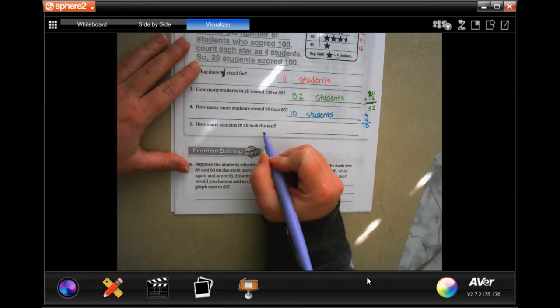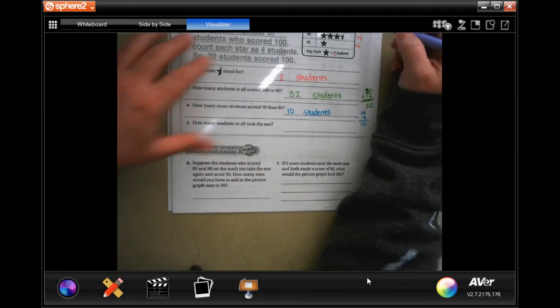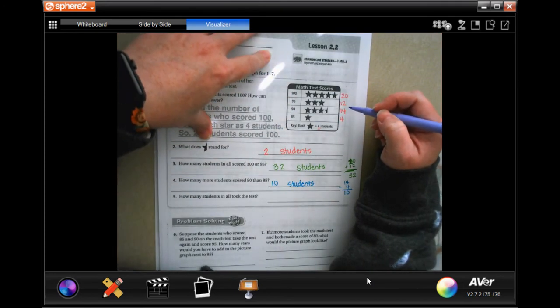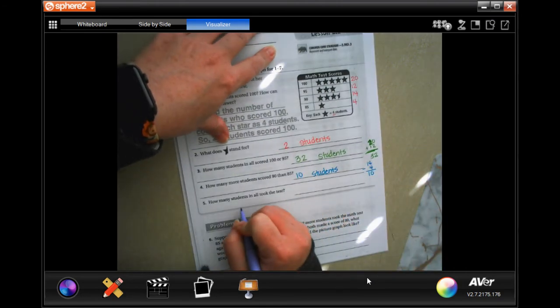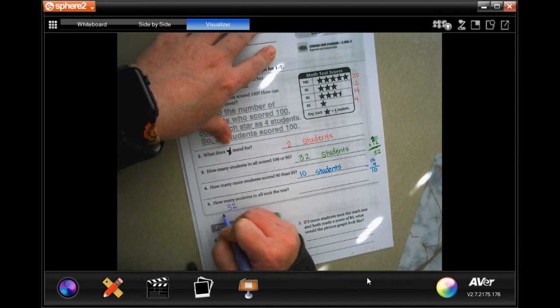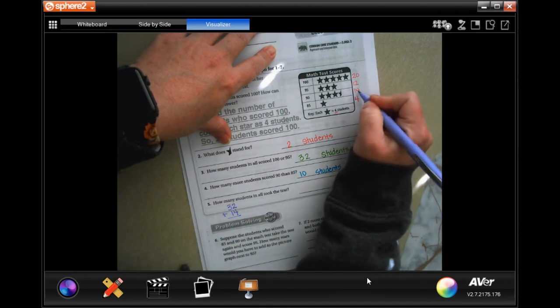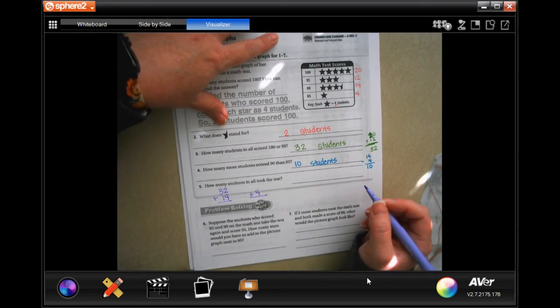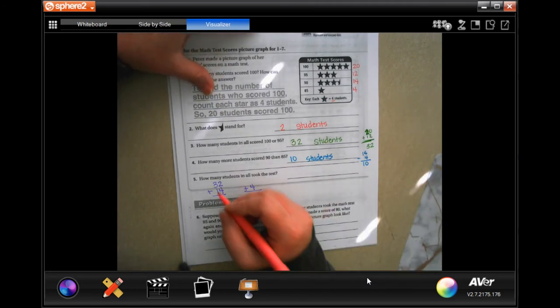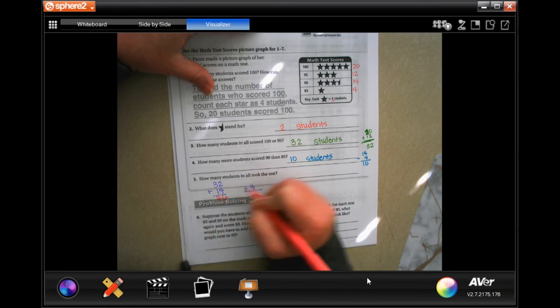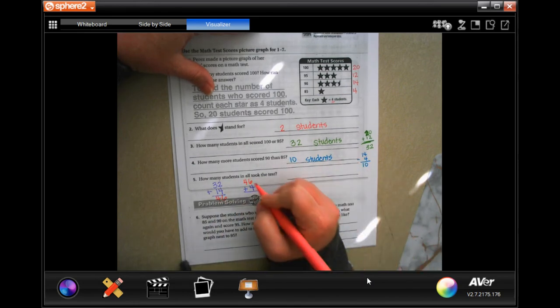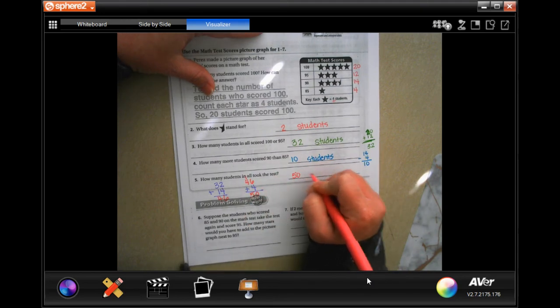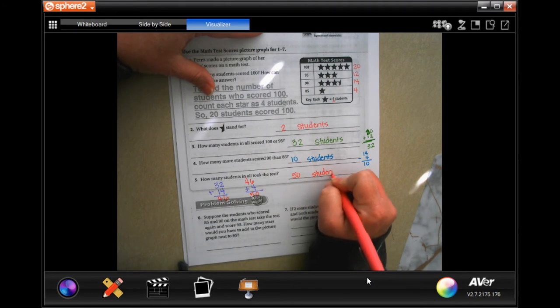Okay, so how many students in all took the test? Well, we know that twenty plus twelve is thirty-two. I'm going to use this whole space right here, and I'm going to do that thirty-two plus the fourteen that's right under it. I'm still going to have to add the four to that number, but this will get me a little bit closer. So, two plus four is six, three plus one is four, so I'm going to go ahead and put that forty-six right here. Six plus four is ten, carry the one, one plus four is five, so fifty students.